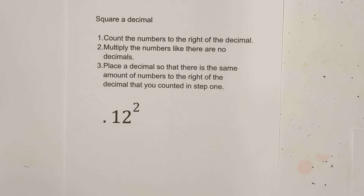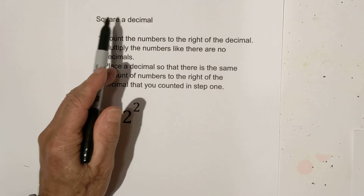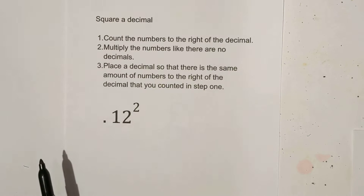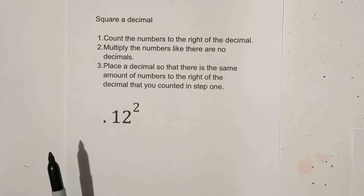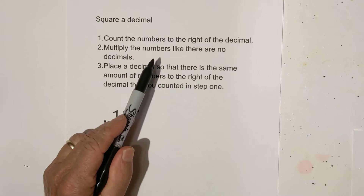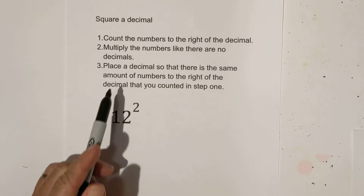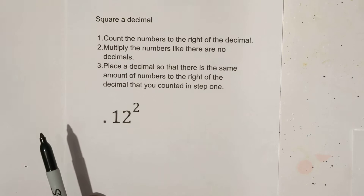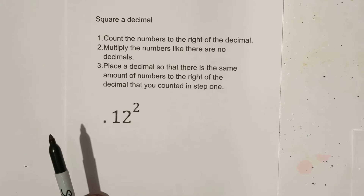Welcome to Moo Moo Math and Science. In this video, let's go over how to square a decimal. Basically, what you do is you count the numbers to the right of the decimal, then you multiply the numbers like there are no decimals, and then you place a decimal so that there is the same amount of numbers to the right of the decimal that you counted in step one.